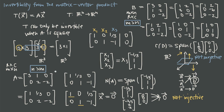The column space tells you about surjectivity and the null space tells you about injectivity. So the conclusion is: if you have a rectangular matrix — a matrix that is not square — you're always going to have a problem with the transformation being either not injective or not surjective. If you ever have a problem with either one of those, you know right away the transformation is not invertible. The only possible way for the transformation to be invertible is for the matrix A to be square. If it's square, there's a chance the transformation is invertible, but if A is rectangular — more columns than rows or more rows than columns — there is no possible way for the transformation to be invertible.